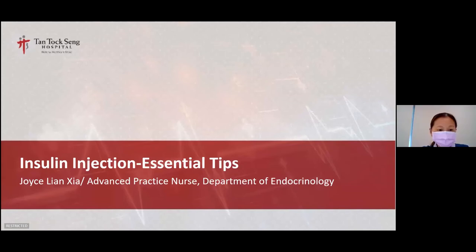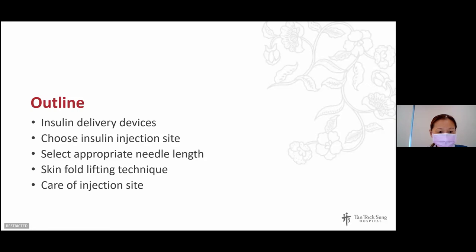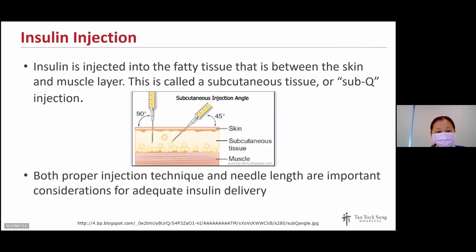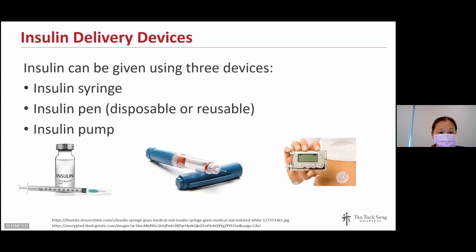Thank you. Good afternoon everyone. My name is Joyce, Advanced Practice Nurse in the Endocrine Department. I'm going to share essential tips for insulin injection. Insulin is a hormone produced by the pancreas, and its function is to move sugar from the bloodstream into the body cells for energy or storage. Insulin is injected into the fatty tissue between the skin and muscle layer — this is called subcutaneous tissue or subcutaneous injection. Correct insulin injection technique and appropriate needle length are very important for adequate insulin delivery and absorption. Insulin can be given using three devices: an insulin syringe, an insulin pen (disposable or reusable), or an insulin pump.